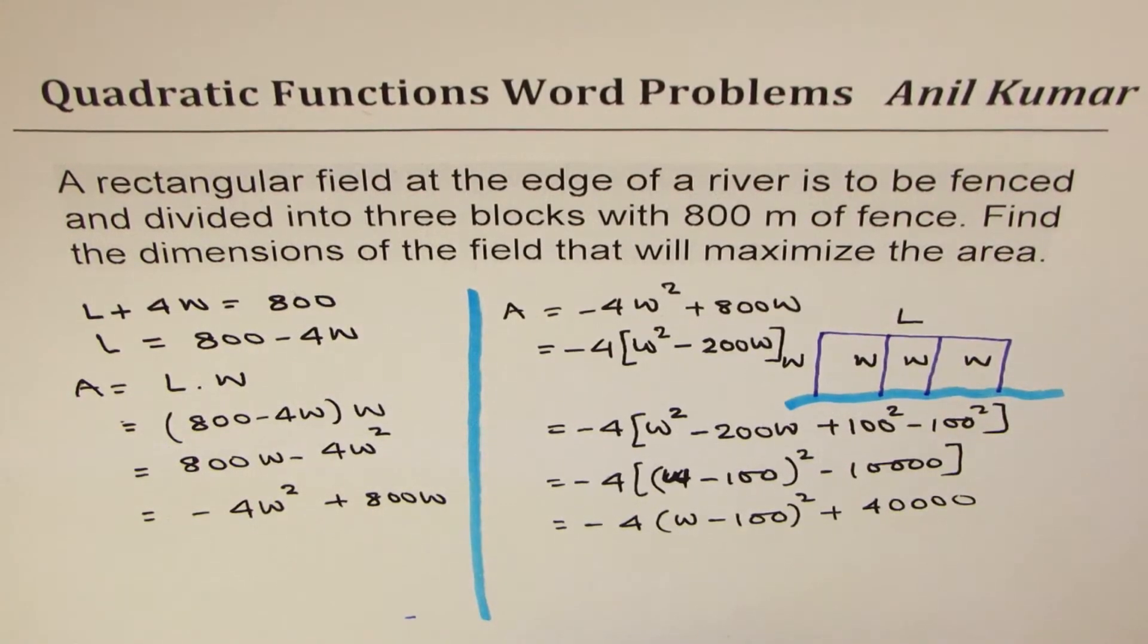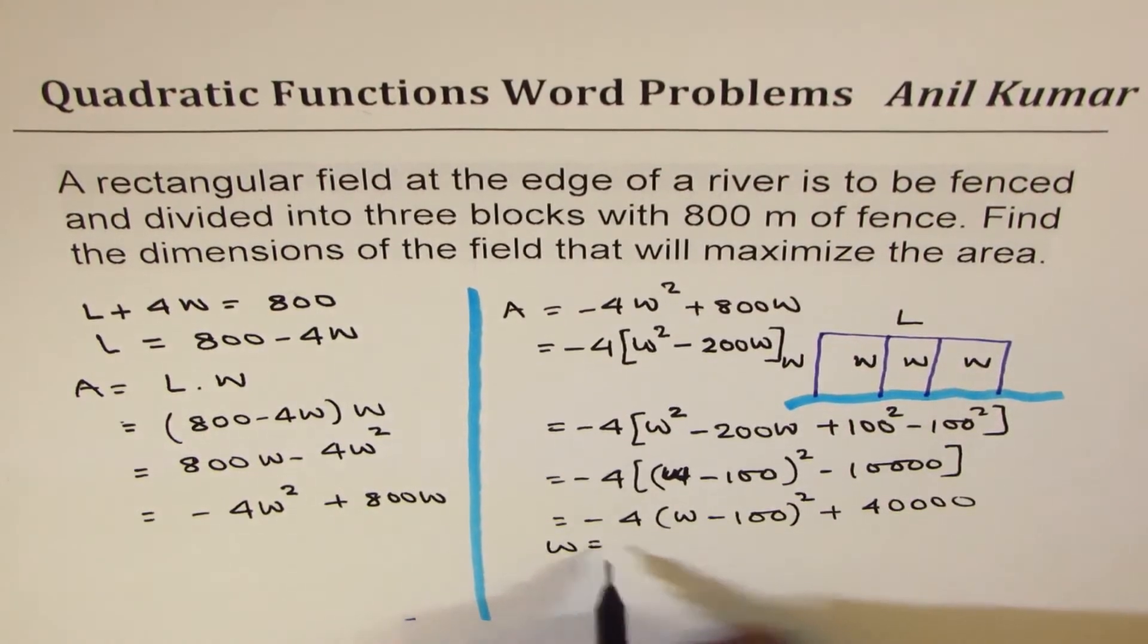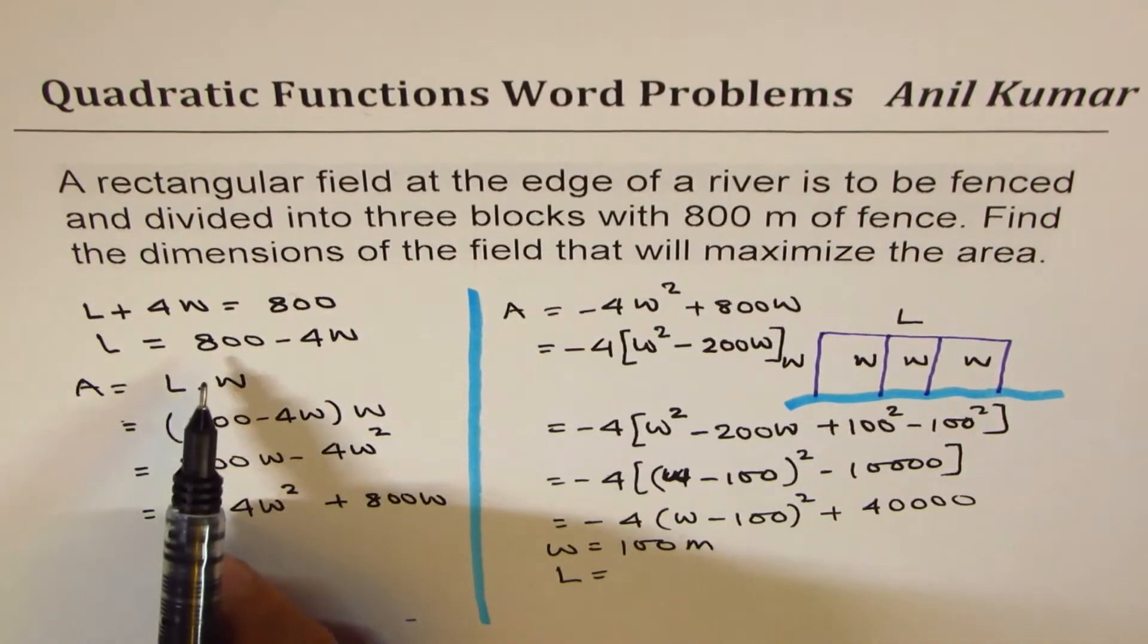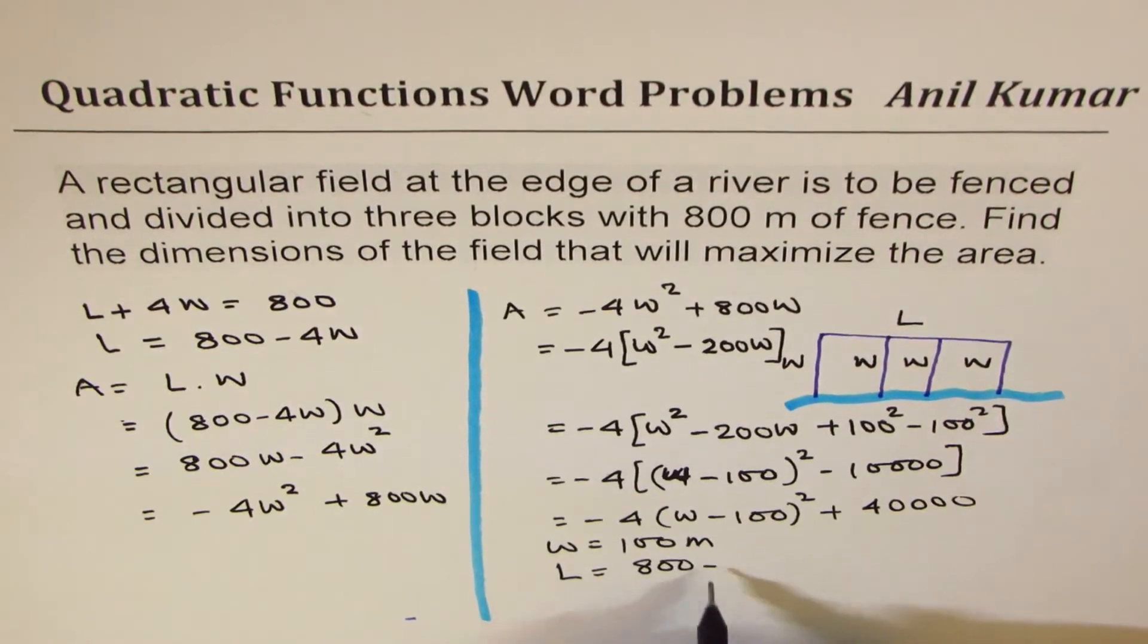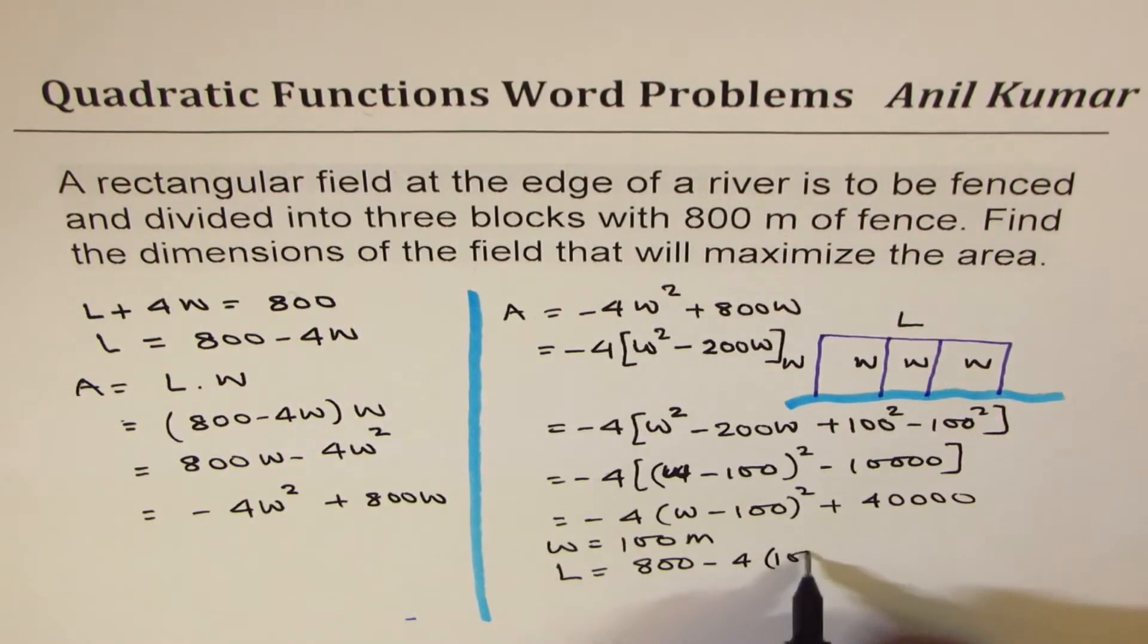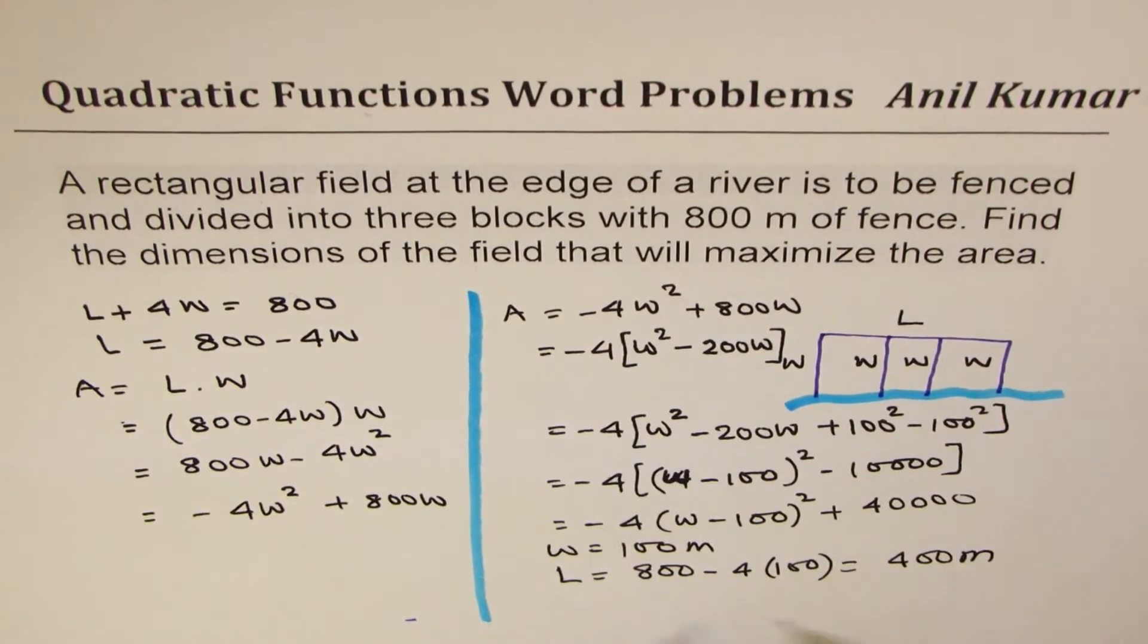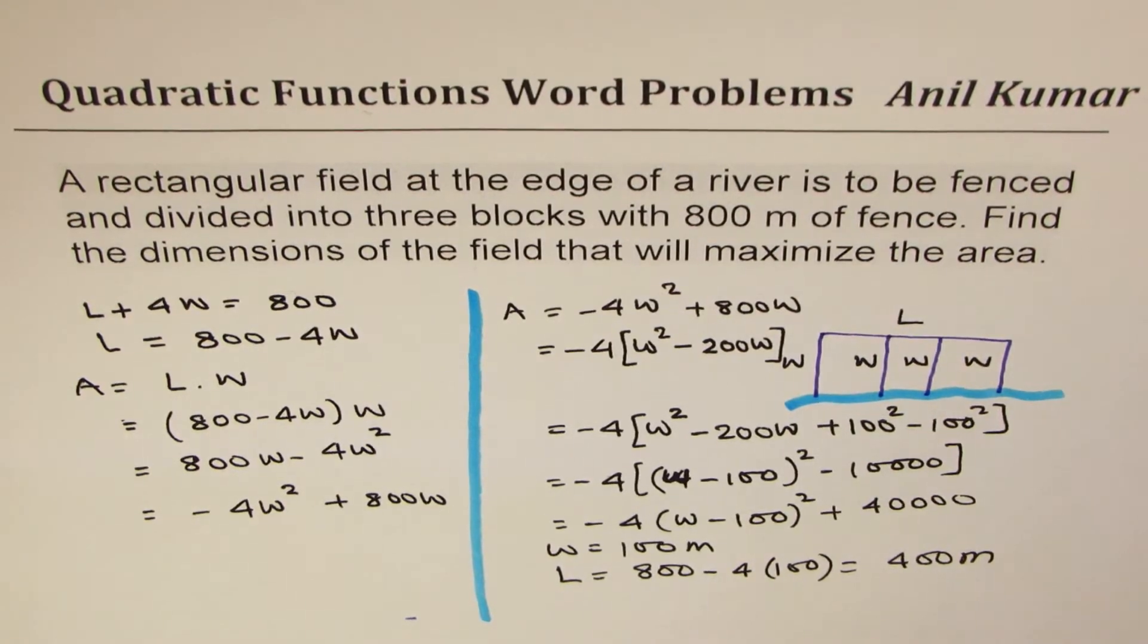So the dimensions which will maximize: the width of 100 meters and the length will be 800 minus 4 times 100, which is 800 minus 400, and that is 400 meters. So that gives you length and width for the given situation.